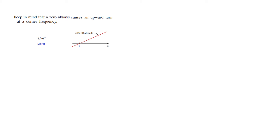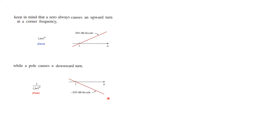To start, let's revise some things learned earlier. If the slope is going up — that is, positive slope — this represents a zero. A zero always causes an upward turn at a corner frequency. Similarly, if the slope is going down — negative — this is represented as a pole, written as 1 over jω, whereas a zero was just jω.